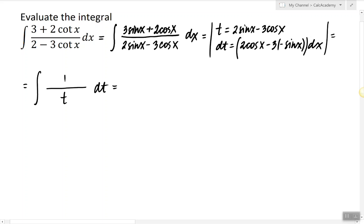So the answer is ln absolute value of t plus c, but t is 2 sine x minus 3 cosine x. So this is the answer.